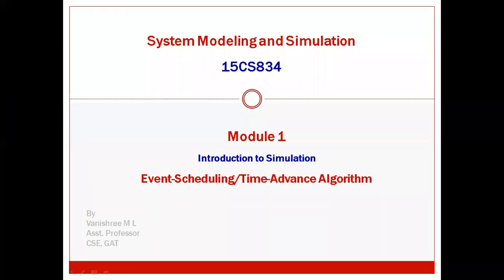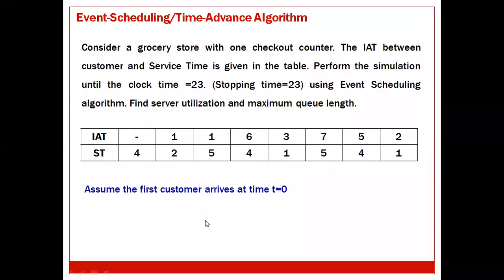Hello students. In this video we will see one problem on event scheduling. The question is: consider a grocery store with one checkout counter. The inter-arrival time (IIT) between customers and service time (ST) is given in a table. Perform the simulation until the clock time is 23 — the stopping time — using the event scheduling algorithm. Find server utilization and maximum queue length.